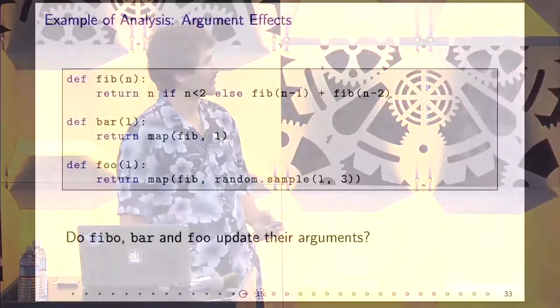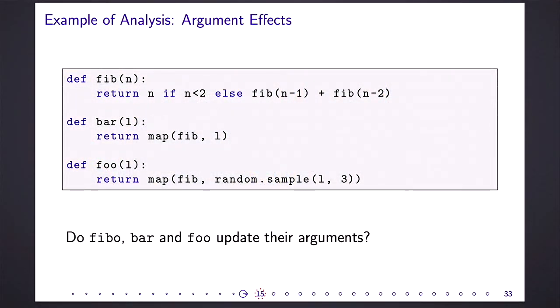Some other analysis that we do is trying to find if a function is pure, not pure. Here it's first if a function will modify, will have a side effect on the arguments. So here the first function, Fibonacci, obviously doesn't modify N. So it's side effect free on the arguments. And then bar applies a map on Fibonacci. Since the compiler knows that Fib is side effect free on the arguments, it will infer that bar is also. Which means that Pythran builds a call graph and is able to do this interprocedural analysis propagating through the call graph all these informations. And it will deduce that bar is side effect free on L. We propagate this through the call graph in Pythran.